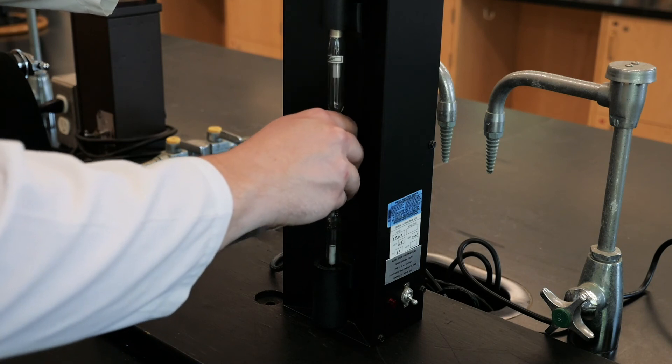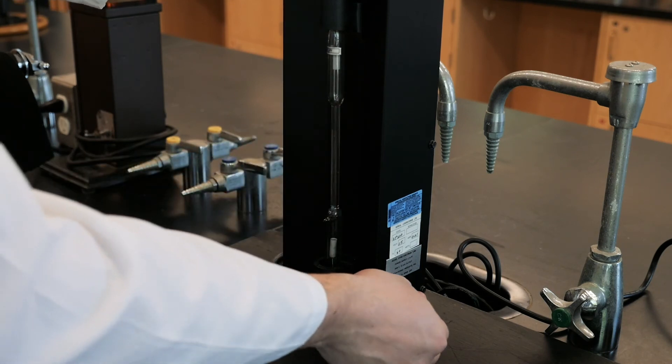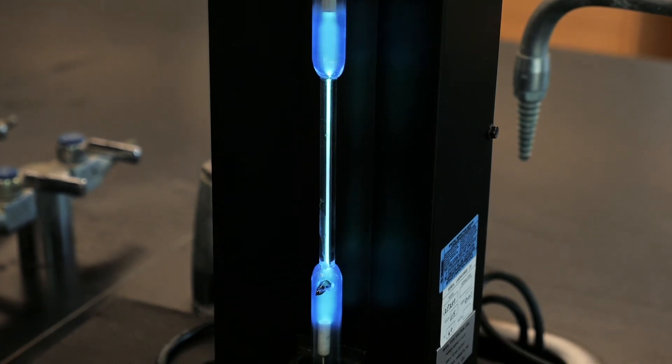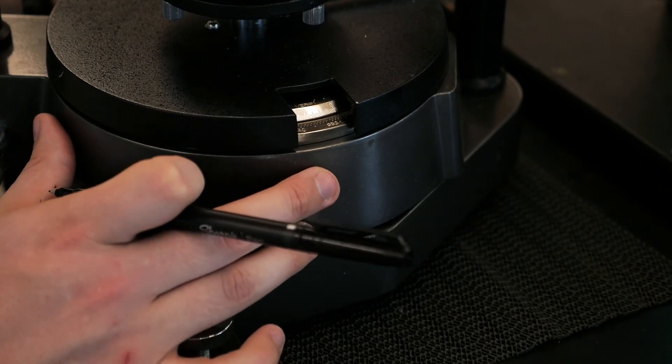Next, try the mercury discharge tube, and you'll again notice three spectral lines. In exactly the same manner as before, calculate and report the wavelengths observed for each of the three lines.